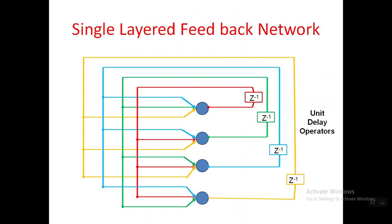In a single-layered feedback network, there is no fixed input or output — you can take output from anywhere and provide input anywhere. Only one layer is present. The output of the first neuron is processed through a unit delay operator and then fed back to the other neurons. For example, the red-colored output from the first neuron is processed through the unit delay operator and given to the other neurons, but not back to the same neuron.